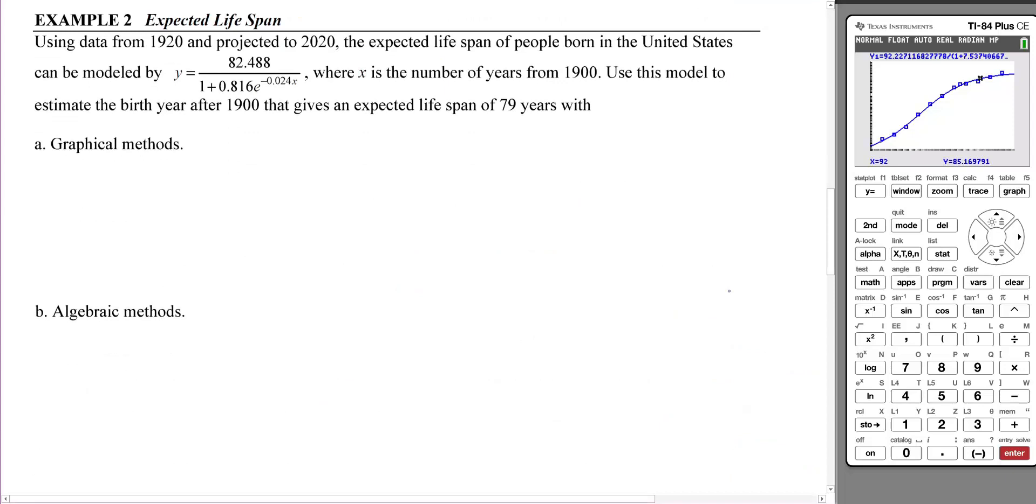Example 2: Expected Lifespan. Using data from 1920 and projected to 2020, the expected lifespan of people born in the United States can be modeled by y = 82.488/(1 + 0.816e^(-0.024x)), where x is the number of years from 1900. Use the model to estimate the birth year after 1900 that gives an expected lifespan of 79 years with first graphical methods and then algebraic methods.